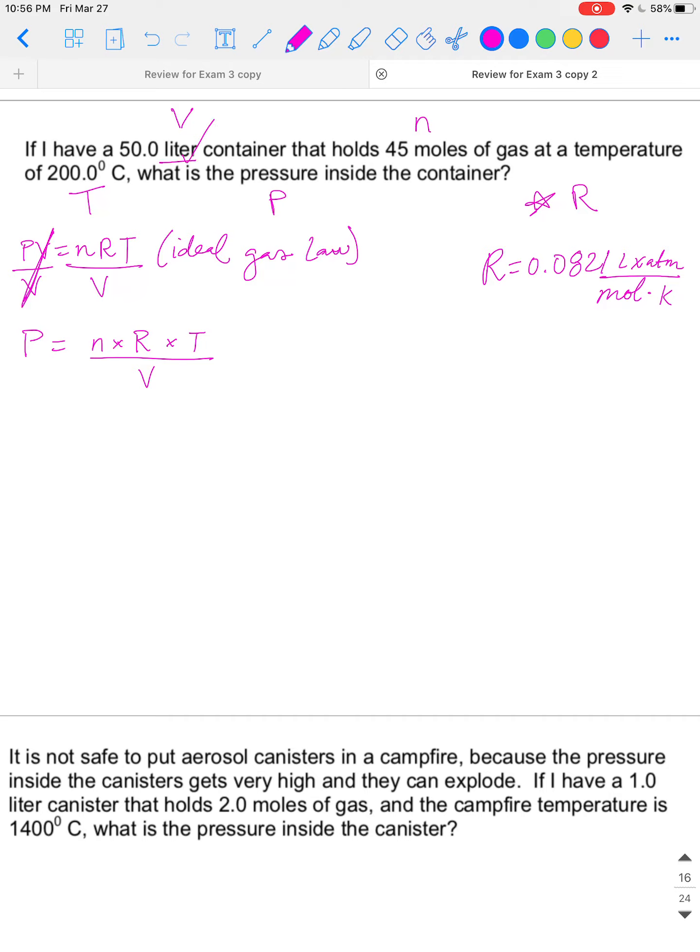R volume, we have units of liters, check. We have units of moles, check. Uh-oh, we don't have units of Kelvin. We have degrees Celsius. So I'm going to take temperature. I'm going to convert it to Kelvin. So 200 degrees Celsius, which is really, really hot, plus 273.15 equals 473.15 Kelvin. Now we have Kelvin, check. So we are good to go.